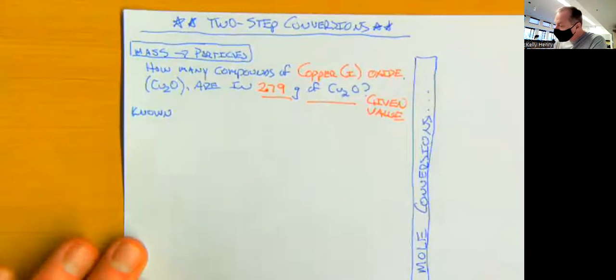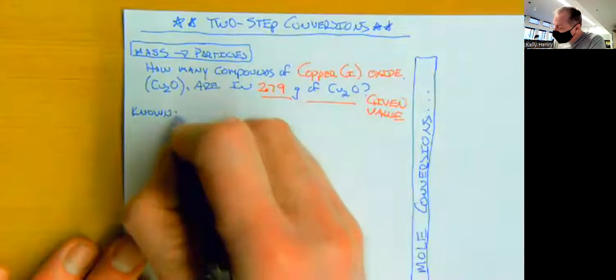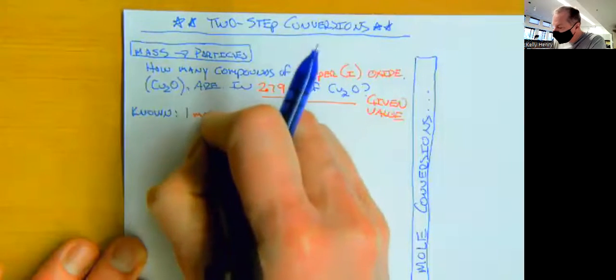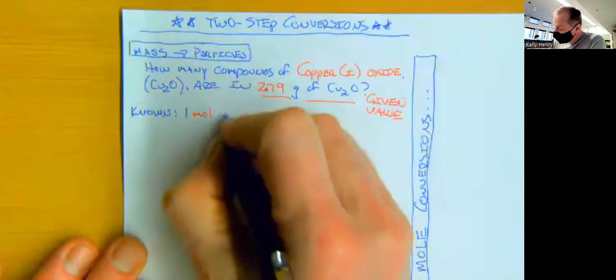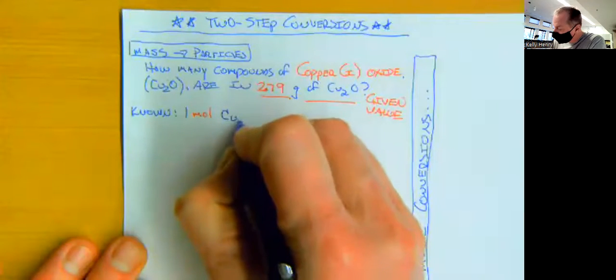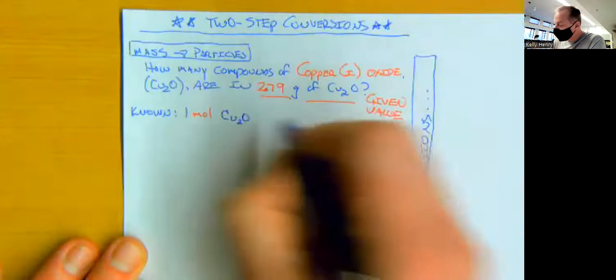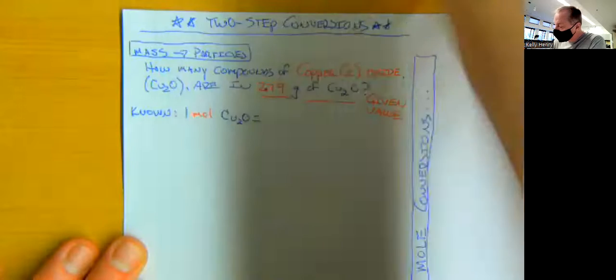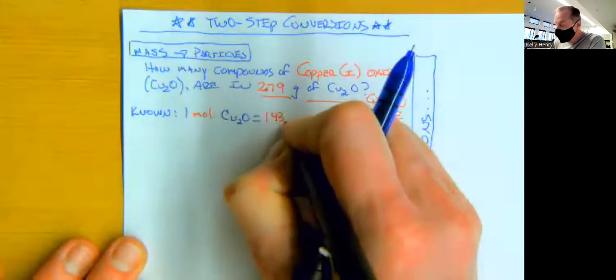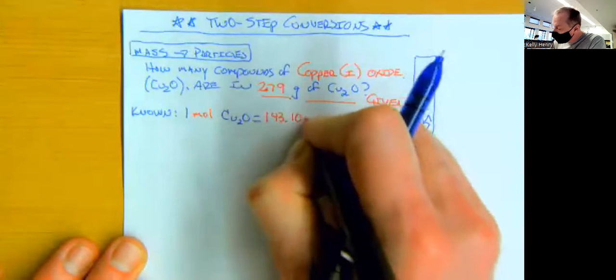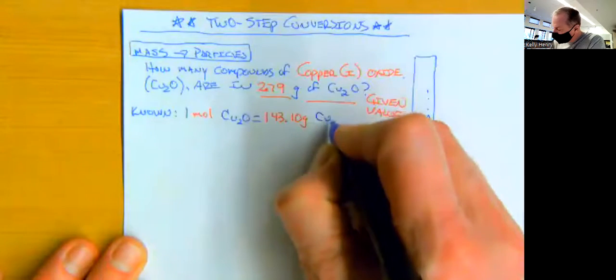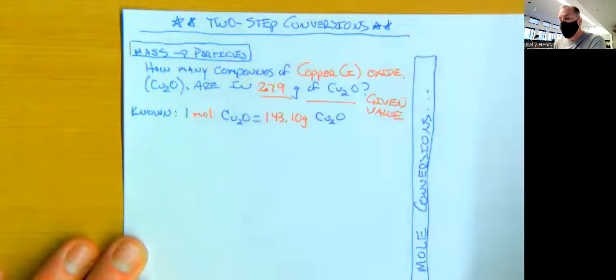Well, we know that one mole of copper one oxide is going to be equal to 143.10 grams of copper one oxide.